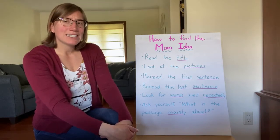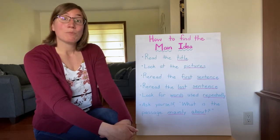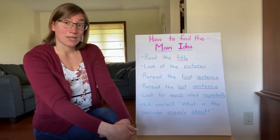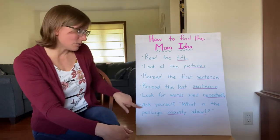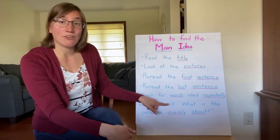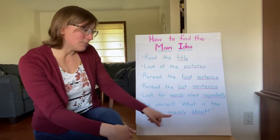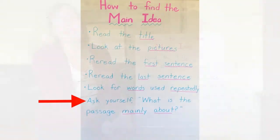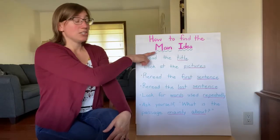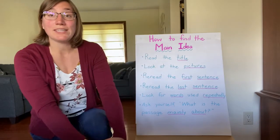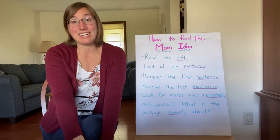Look for words that are used repeatedly — over and over again — in the passage. That word will probably be associated with the main idea. And really think about what the main idea is: the most important point, the most important information from the passage. When you're done reading, ask yourself, 'What is this passage mainly about? What is it all about?' Whatever the answer is, if it's a single sentence, that sentence is your main idea. Now we're going to look at a passage together and use this information to identify the main idea.